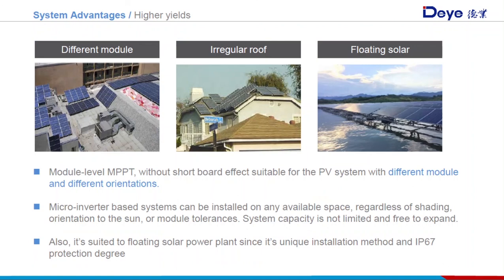Microinverter systems can be installed on any available space regardless of shading, orientation, or module mismatch. As shown, the system can include different types of PV modules, and microinverters are strongly recommended for such applications. Also, system capacity is not limited and is free to expand. Additionally, microinverters are suited to floating solar power plants due to their unique installation method and IP67 protection rating.